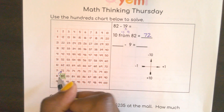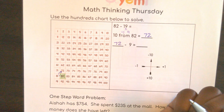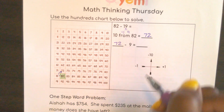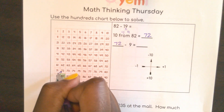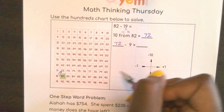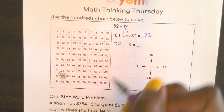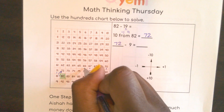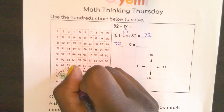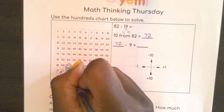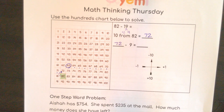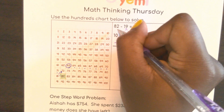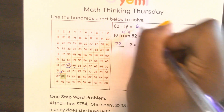Now, I want to do 72 minus 9. See how I'm breaking this into parts? So to subtract, I want to go backwards. I'm going to go across — if I go backwards 1, I would be at 71, but then I'm going to have to go up to 70. So I count 1, 2, 3, 4, 5, 6, 7, 8, 9, and this is where I would stop, right here at 63. So now I know that 82 minus 19 gives me 63.